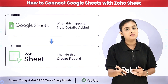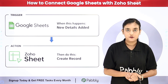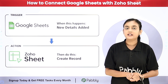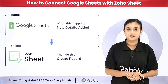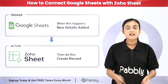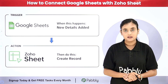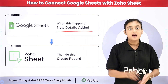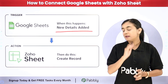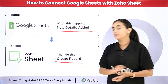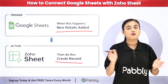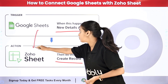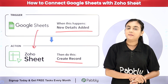Doing this manually is going to take us a lot of time. So what we did was we simply created an automation using Pabbly Connect, which is an amazing automation and integration software. In this automation, as soon as I enter the data of my leads in Google Sheets, automatically the data of that same lead is going to be created as a record in my Zoho Sheet as well. For that we're going to create a connection between Google Sheets and Zoho Sheet with the help of Pabbly Connect.